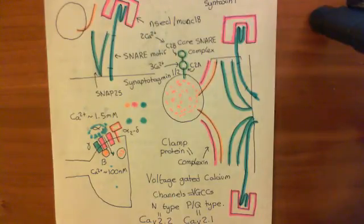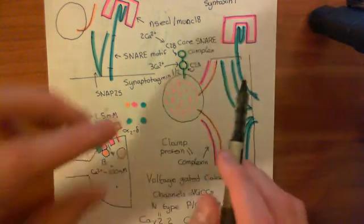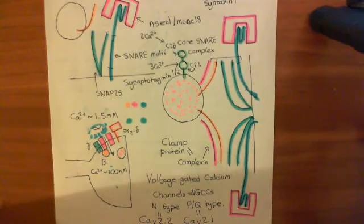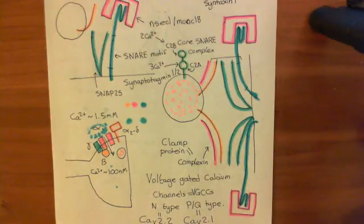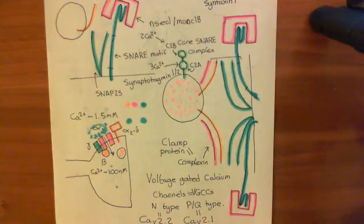So complexin goes from having a clamping effect — stopping the SNARE complexes from fusing the synaptic vesicle with the plasma membrane prior to an action potential — to having a pro-fusion effect once synaptotagmin has activated it. So far, synaptotagmin interacts with syntaxin-1 and complexin, and through those two actions promotes fusion of the synaptic vesicle with the presynaptic membrane. In the next video, we'll look at another function of synaptotagmin — potentially its most important function — which is its interaction with lipids in the plasma membrane.